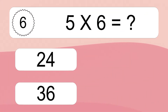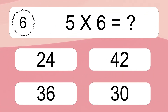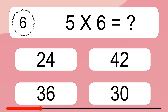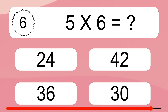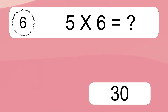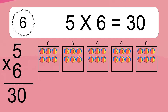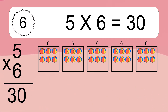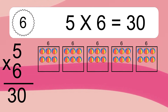Five times six equals what? Five times six equals thirty. We have five boxes and each box has six colorful balls inside. If you count all the balls in all the boxes together, you will have five times six balls. This equals thirty balls.